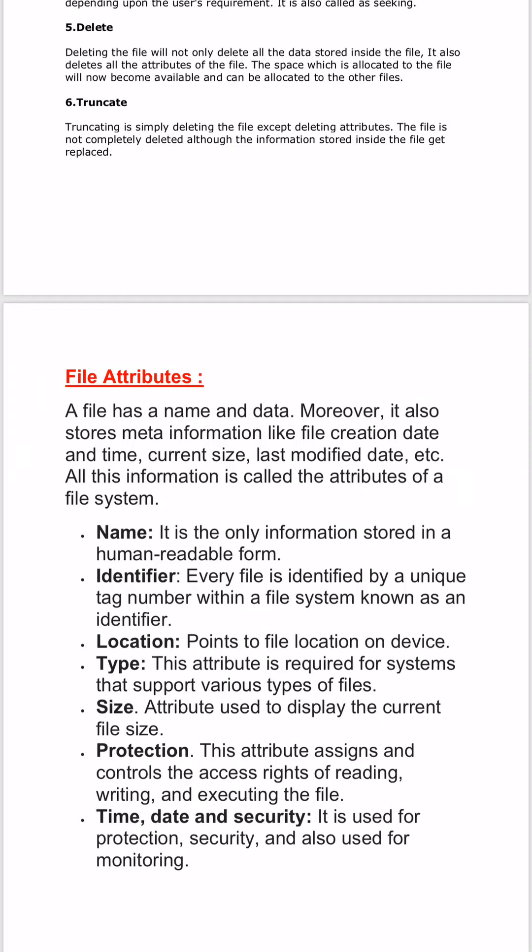Now, what are the attributes? Every file has a name and data. The first attribute is name — it is the only attribute which is in human-readable form. The second attribute is identifier — every file is identified by a unique tag number within a file system, known as the identifier. Every file has a unique tag number so we can know which file the user is trying to access by their tag number.